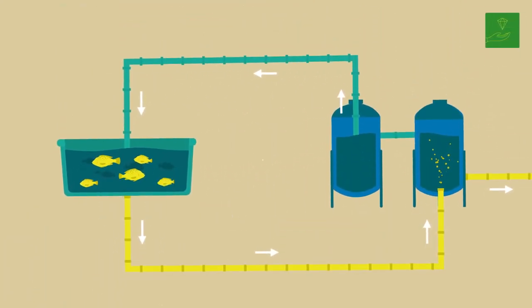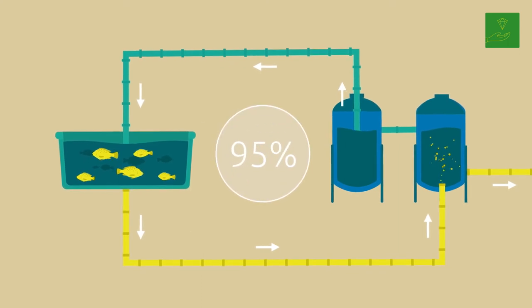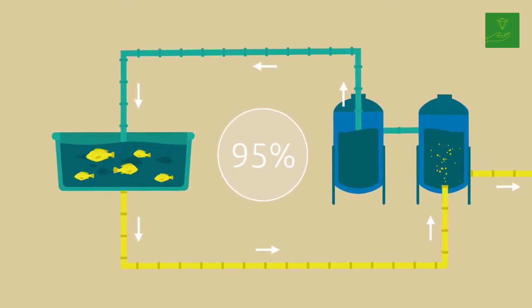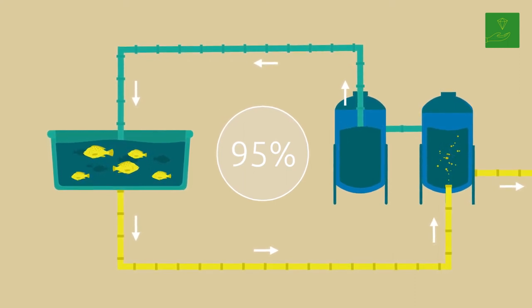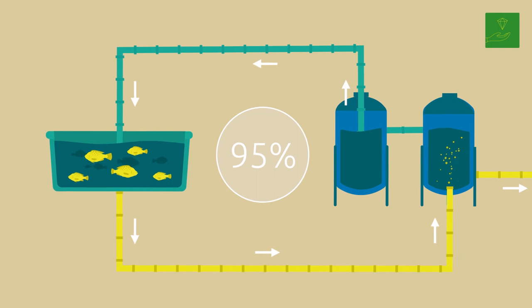Here the fish faeces are filtered out. 95% of the water is recirculated into the system, while the nutrient-rich fish water is used as fertilizer on the adjacent arable land.